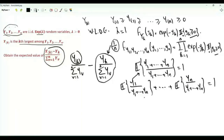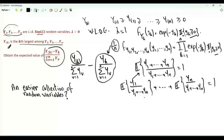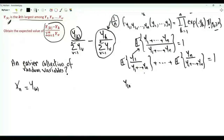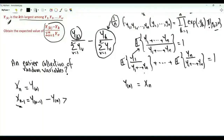Is there a set of random variables easier to handle than the ordered random variables? The idea we attempt — and it eventually works — is to use the differences between the ordered random variables. Specifically, let xn be equal to y(n) in brackets, that is, the minimum of the random variables from y1 to yn. Then xn minus one is defined as y(n-1) in brackets minus y(n) in brackets. By definition, the new random variable xn minus one is non-negative.